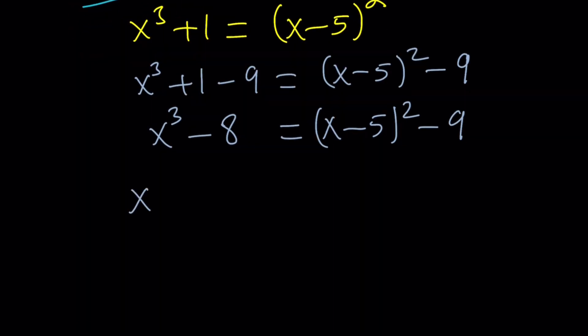So I'm going to take out an x minus 2 here, right? And then that's going to give me x squared plus 2x plus 4. That's going to be the left hand side, right? That's from difference of two cubes.